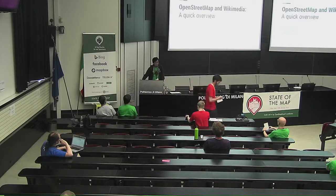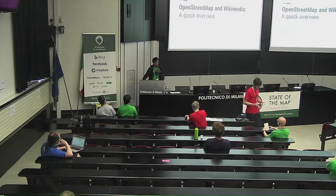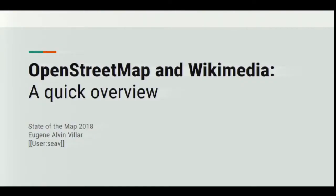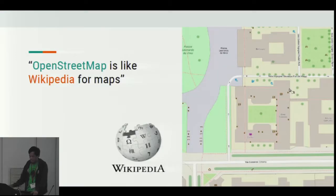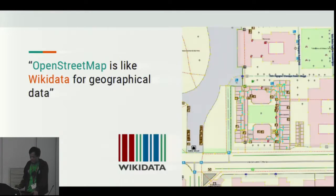Good afternoon. I'll be talking about how the different OpenStreetMap and the Wikimedia communities help and collaborate with each other and make use of each other's projects. Usually when I talk about OpenStreetMap to Wikimedia communities, I say that OpenStreetMap is like Wikipedia for maps. But recently I've been saying that OpenStreetMap is really like Wikidata for geographical data.